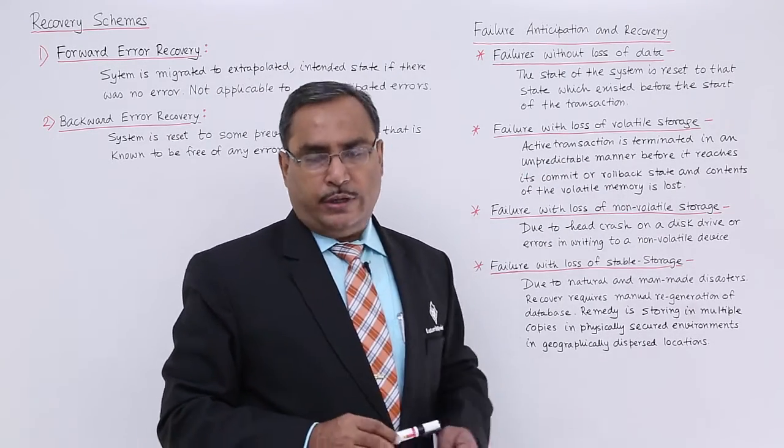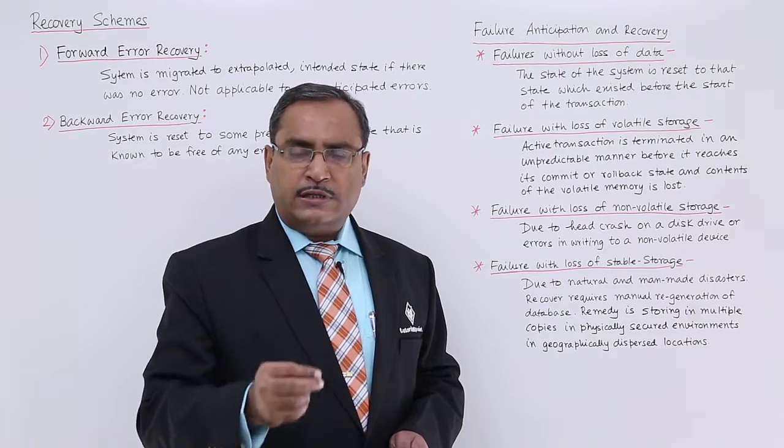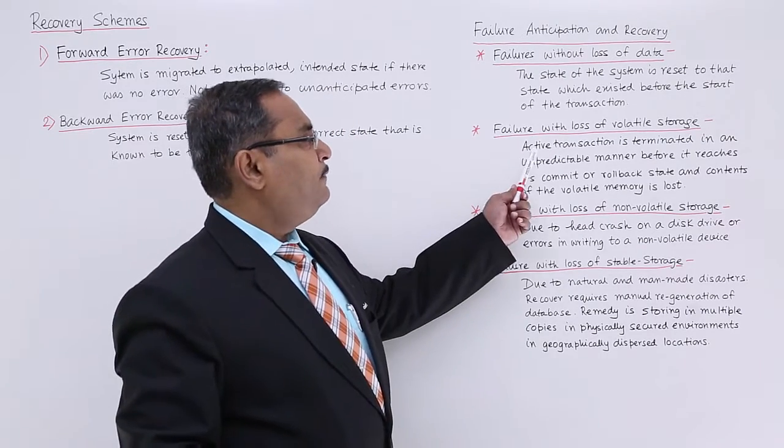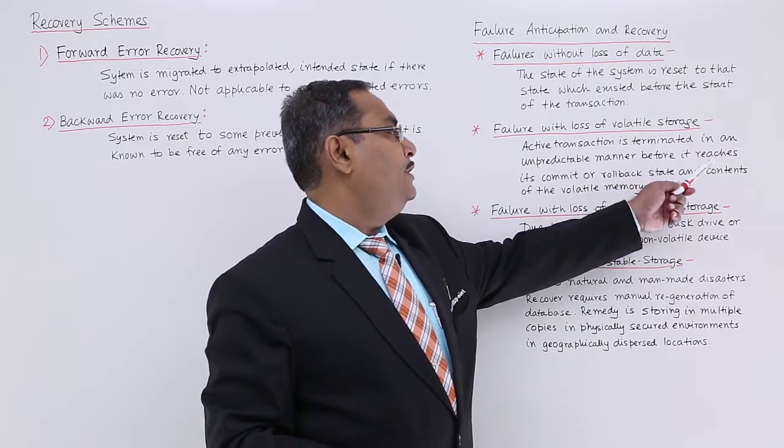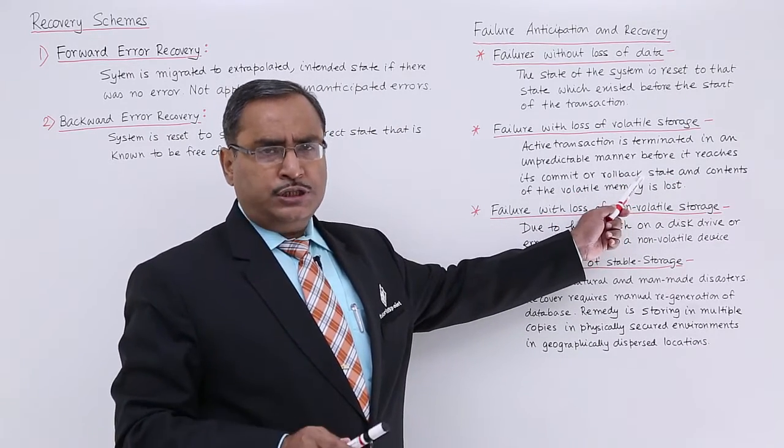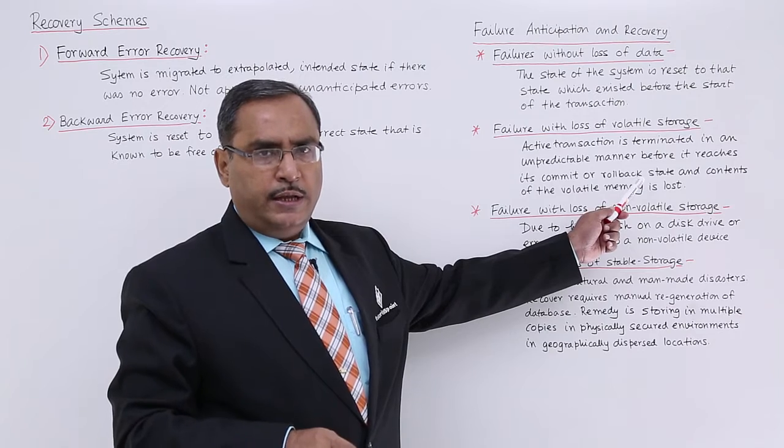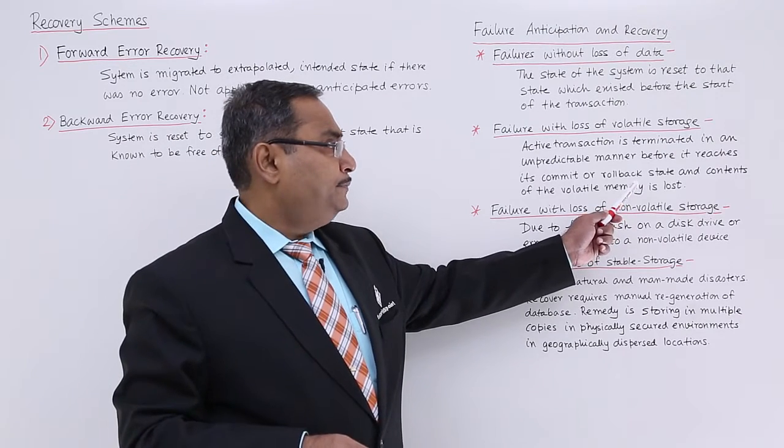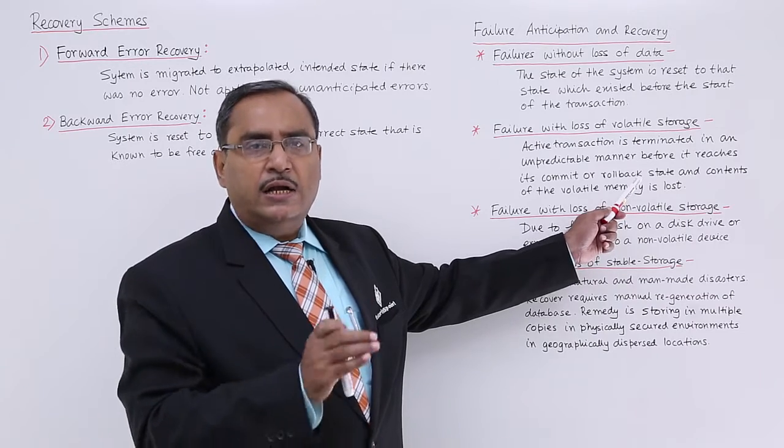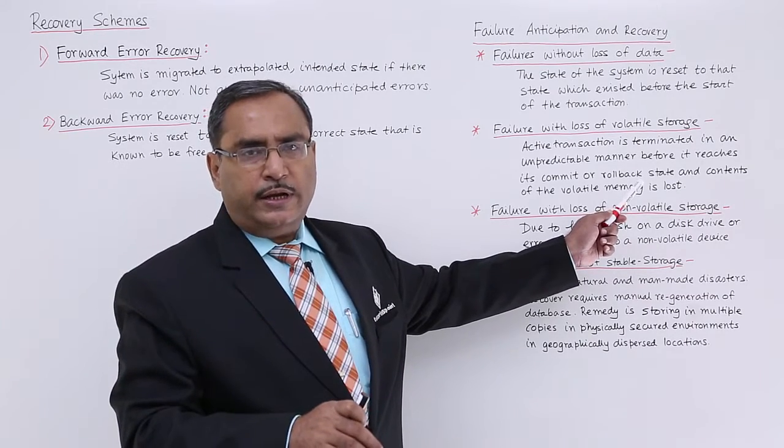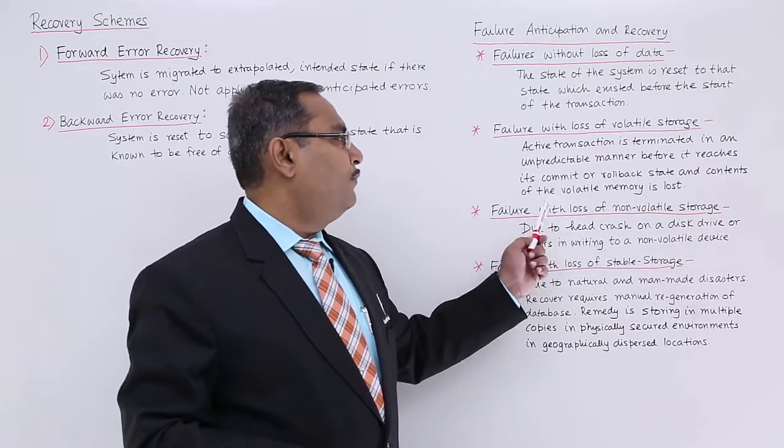Failure with loss of volatile storage. We know that storage will be known as volatile storage which is requiring power supply to hold its data. Active transactions is terminated in an unpredictable manner before it reaches its commit or rollback state. A transaction which was executing due to this particular failure has been aborted, has been terminated in an unpredictable way before it reaches to the commit, that means to make the change permanent, or rollback to make the change undone. Before issuing this particular state, the transaction currently executing has been terminated.